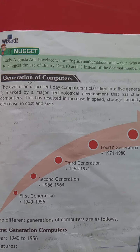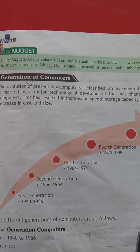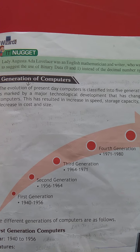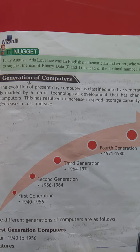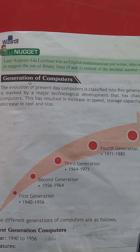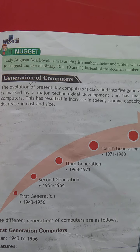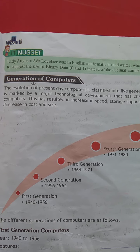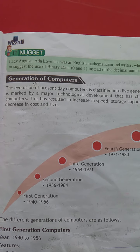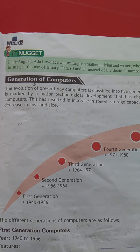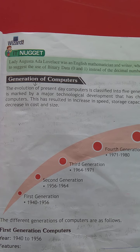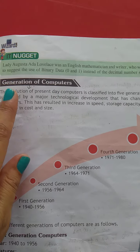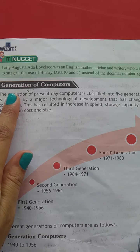If we talk about computers, then generation refers to changes in technology. Initially, generation was used to distinguish between hardware. But nowadays, it includes both hardware and software.